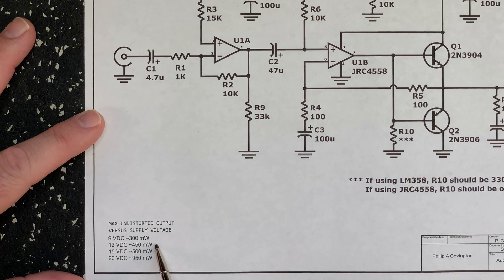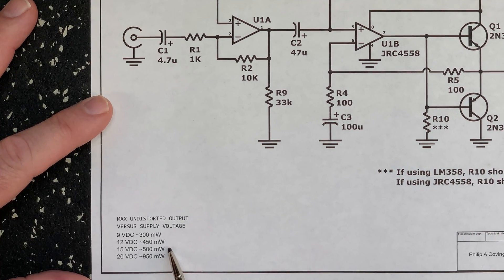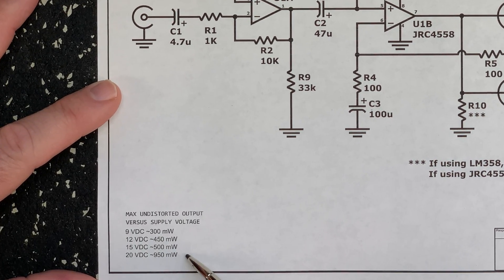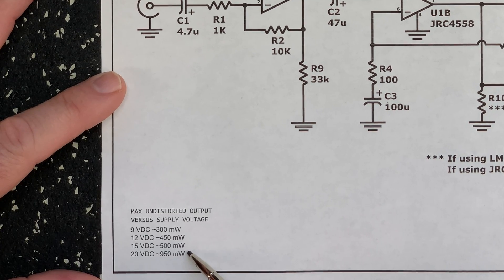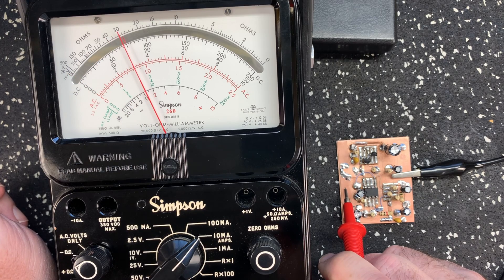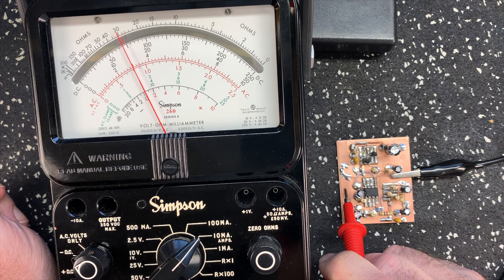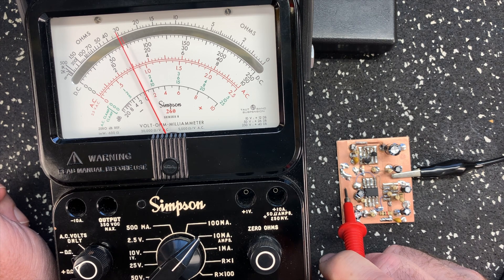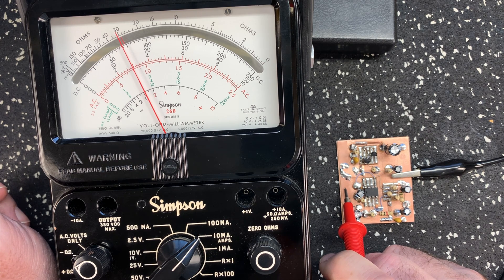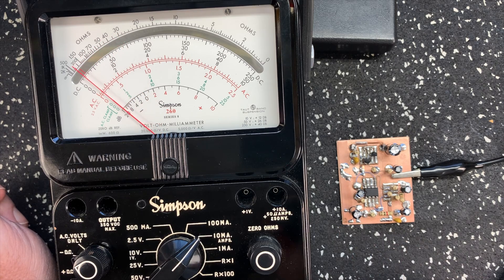At 12 volts, it was around 450 milliwatts. At 15 volts, it was about 500 milliwatts, and at 20 volts, it was almost 1 watt. With no input, the circuit draws about 3 milliamps at 15 volts. The circuit is very stable without any motor boating or oscillation tendencies.